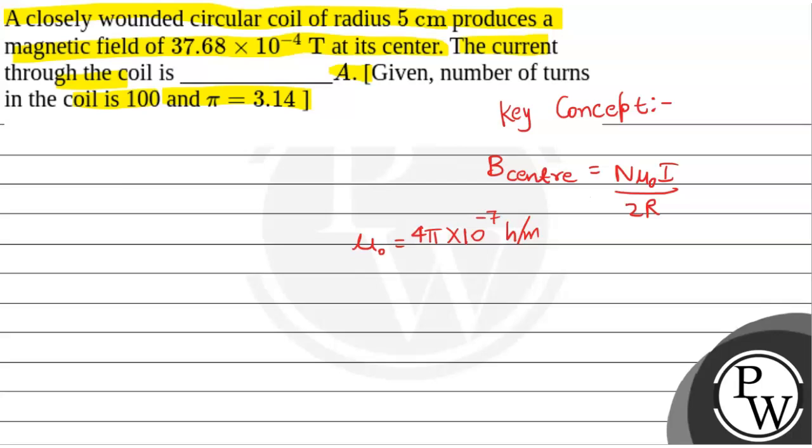From here, magnetic field at center equals 37.68 × 10^-4 tesla equals N number of turns, 100, times 4π × 10^-7 henry per meter times I divided by 2 times r. The radius value is 5 cm, which is 2 × 5 × 10^-2 meters.